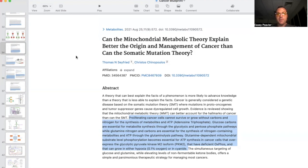Can the mitochondrial metabolic theory explain better the origin and management of cancer than the somatic mutation theory? A theory that can best explain the facts of a phenomenon is more likely to advance knowledge. As we talked about in the previous videos, cancer is generally considered a genetic disease based off the somatic mutation theory, where mutations cause dysregulated cell growth. However, evidence is showing that the mitochondrial metabolic theory can better account for the hallmarks of cancer than the somatic mutation theory.